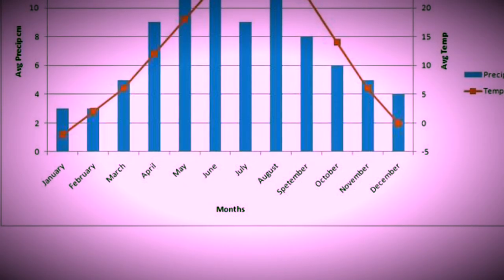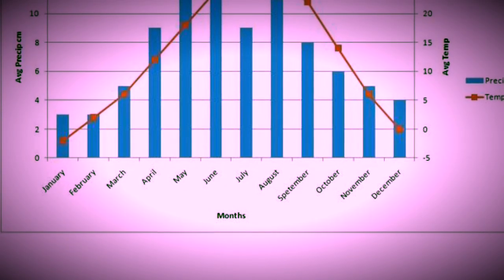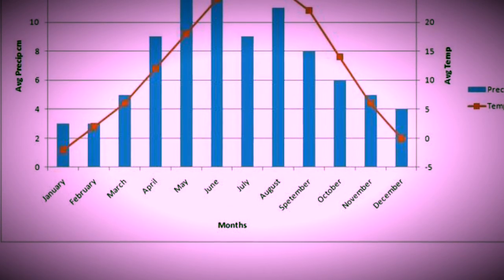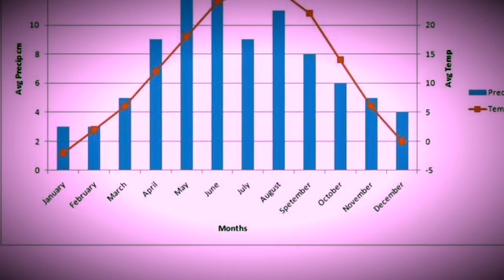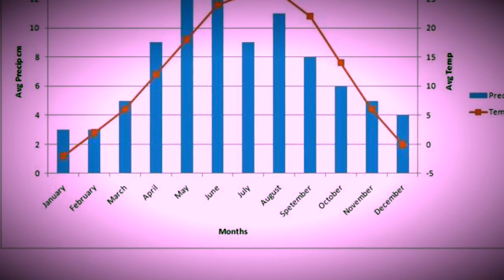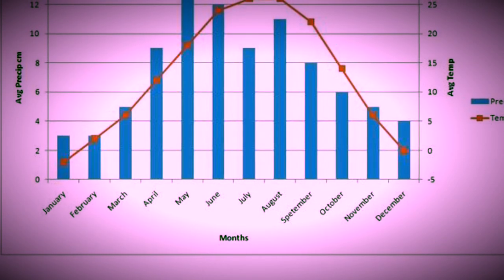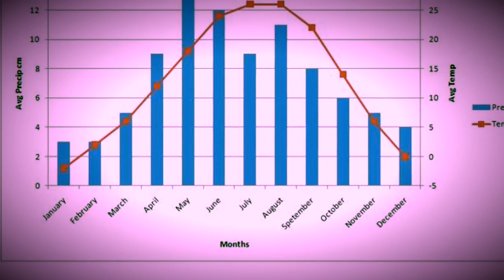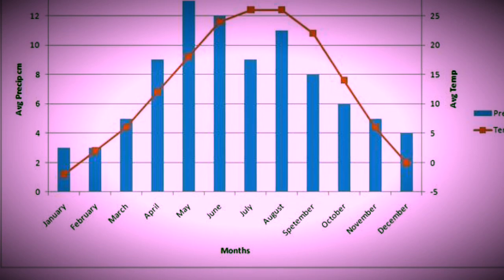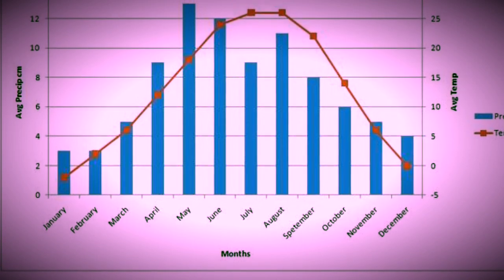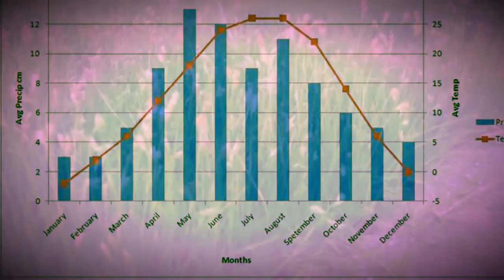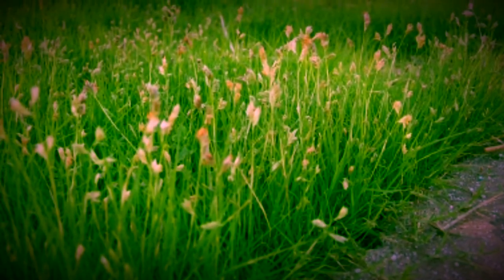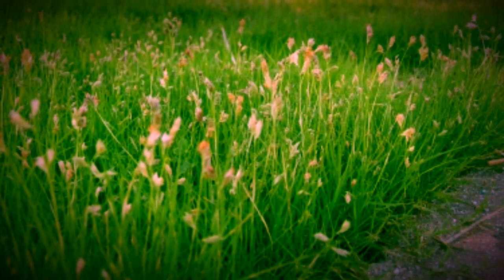For the climate, the temperature extremes are wider than anywhere else on earth. During the summer, temperatures can reach over 100 degrees Fahrenheit, while winters can be as cold as negative 40 degrees Fahrenheit. Rainfall is moderate and seasonal, raining about 10 to 35 inches per year.